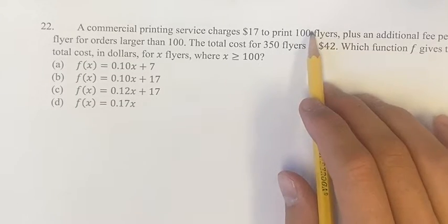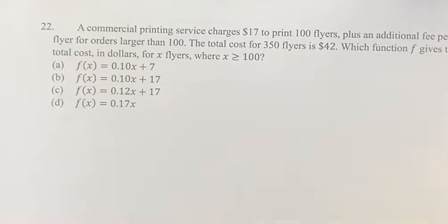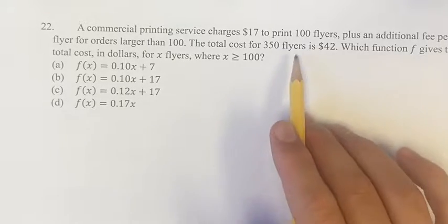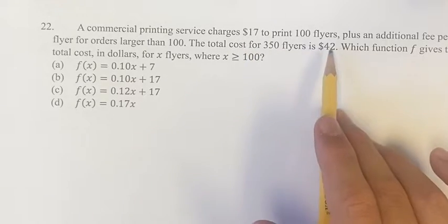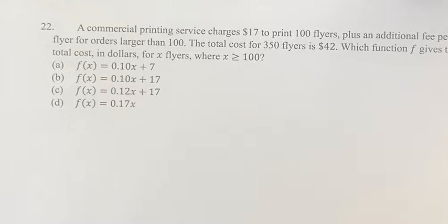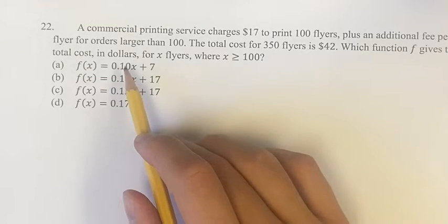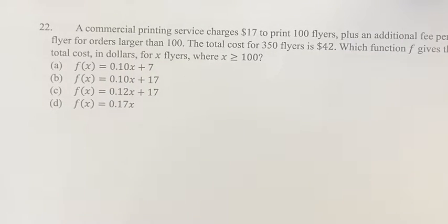If we plug in 100 and 350, only one of them is going to output 17 for 100 and 42 for 350. So what we do to solve this is plug in 100 and 350 until we only have one answer left.